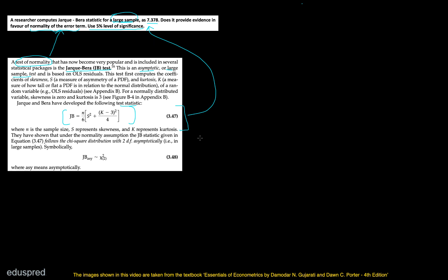Now let's see what they have written about the critical value. Under the normality assumption, the JB statistic follows the chi-square distribution with two degrees of freedom asymptotically — that is, in large samples. So to find the critical value, you have to look at the chi-square table for two degrees of freedom.